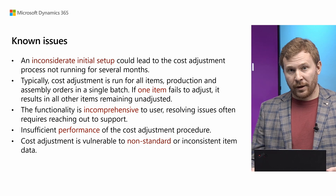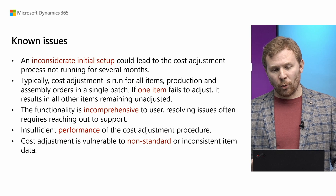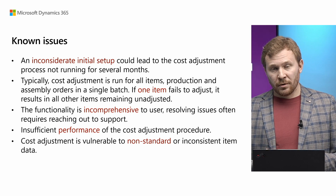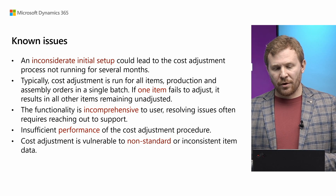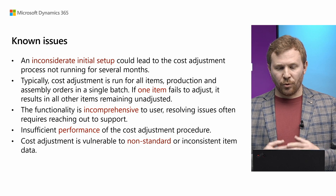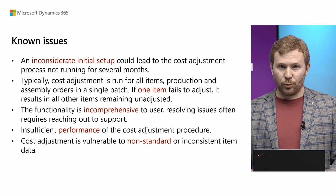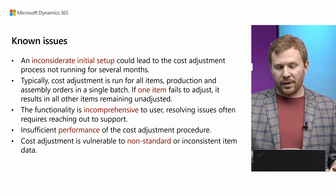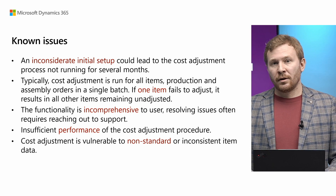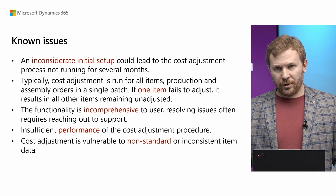Speaking of issues, what might actually go wrong? Based on our experience, I would highlight the following topics. First, going live with no cost adjustment schedule may result in the cost adjustment not running for several months, and it would take hours of cost adjustment work to get back to normal state. Second, just one item failing to adjust rolls back the entire transaction, so all other items remain unadjusted and the cost is not accurate.